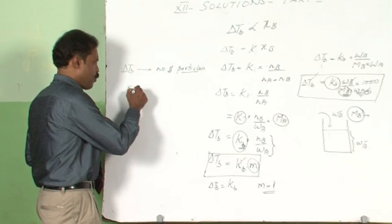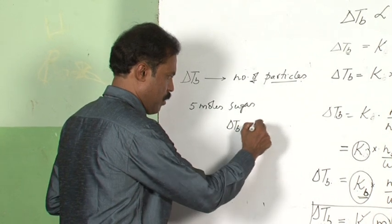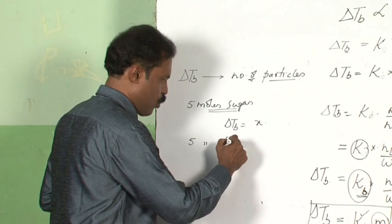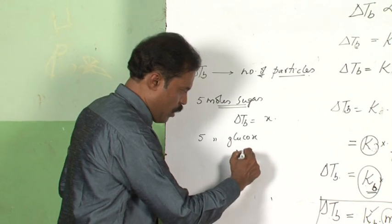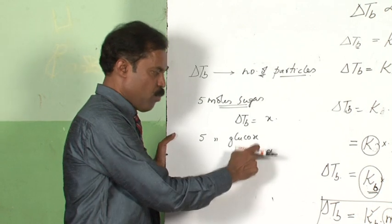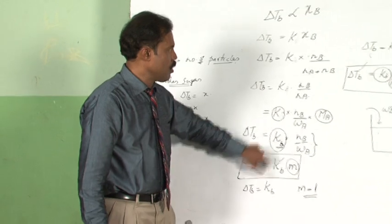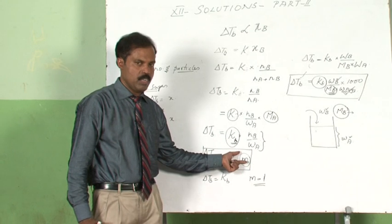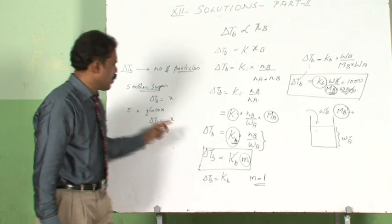If you dissolve 5 moles of sugar you get delta Tb as x. Now if you dissolve 5 moles of glucose under the same conditions with the same solvent, the value of delta Tb will be the same, because delta Tb depends only on the number of moles of the substance — it depends only on the molality of the solution, not on the substance that we use.